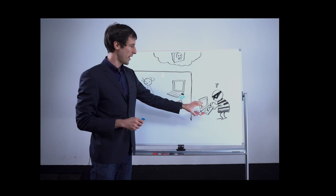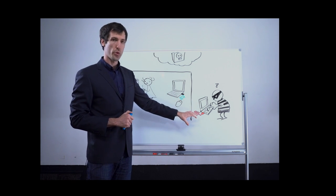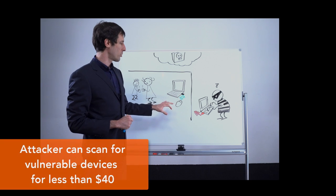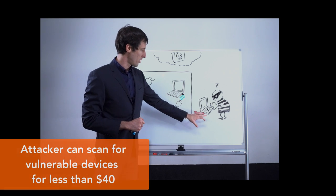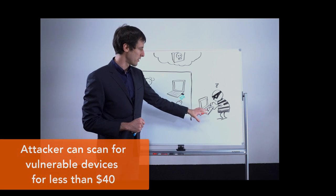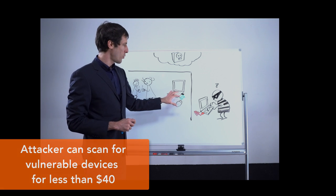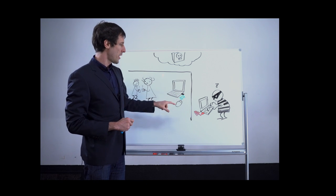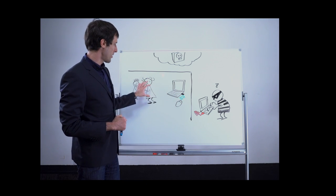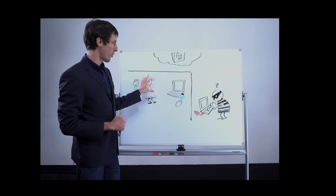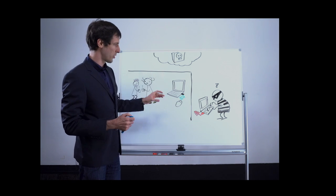In this scenario we have an attacker that is scanning for vulnerable MouseJackable devices with this radio and dongle plugged into their own computer. They will pick up the presence of this vulnerable dongle and then as the employee is actually looking away from the screen in this case and the screen is not locked...